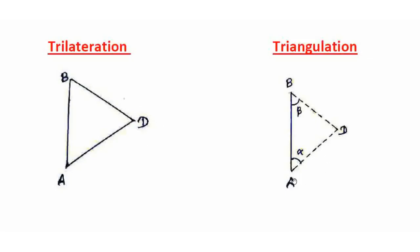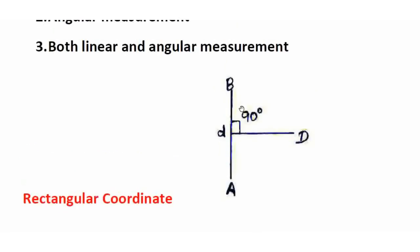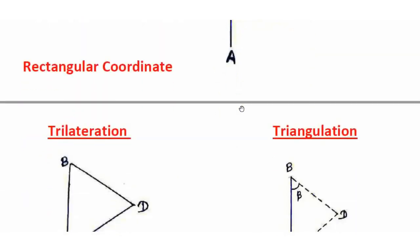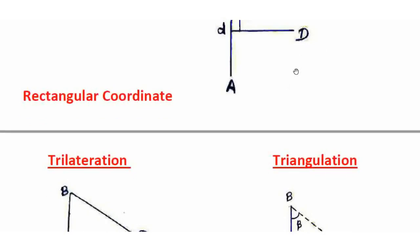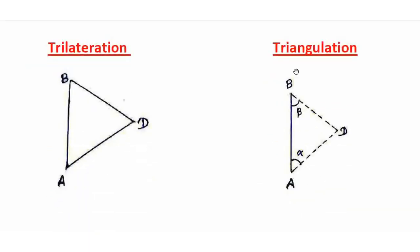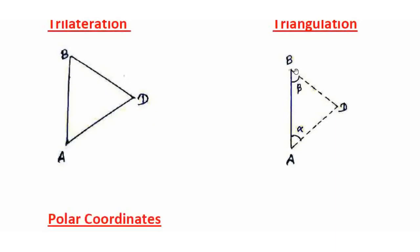Triangulation diagram: A and B are reference points. Alpha and Beta are the angles measured. A or B is a reference point and the angles are measured with a protractor. The angles intersect to locate the new station D. Triangulation is angular measurement. The first case is perpendicular offset using tape, which is linear measurement. The second case is triangulation which is angular measurement.